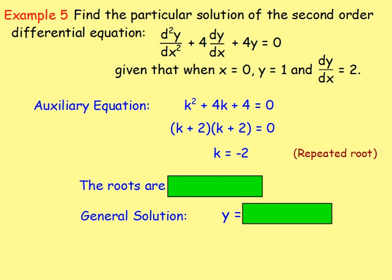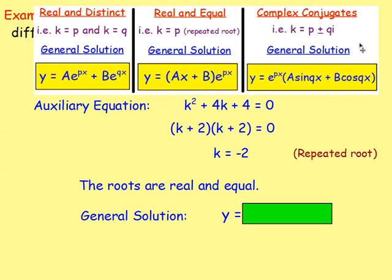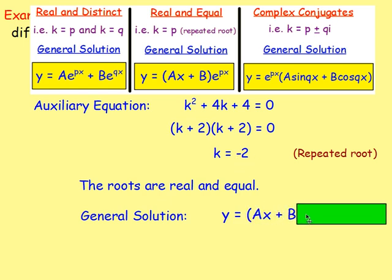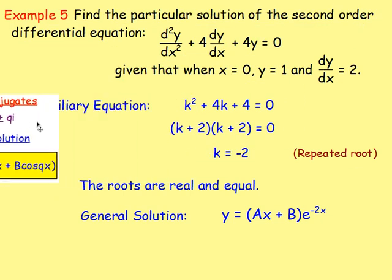The roots are real and equal. Remember, back to what we were doing in the last lesson: if the roots are real and equal and k equals just one number, the general solution is y equals (ax + b)e^(kx). Here, because k is negative 2, we'd have y = (ax + b)e^(−2x). And that is the general solution.